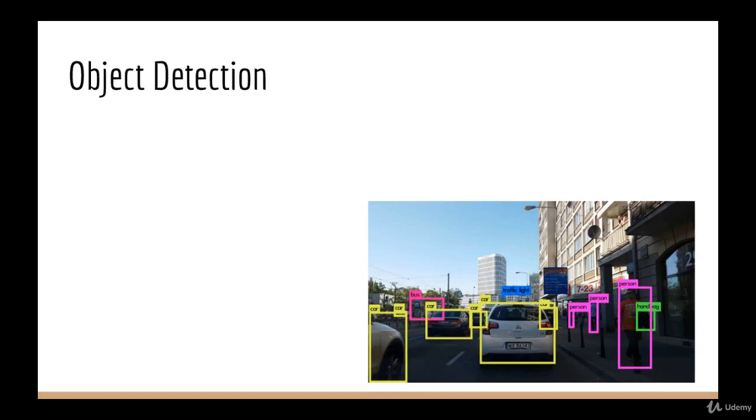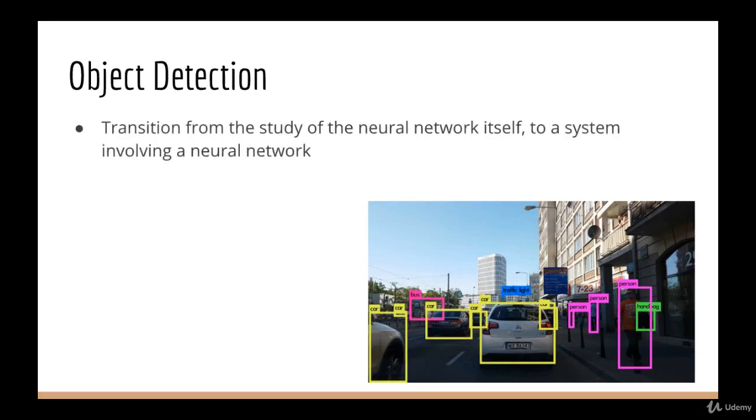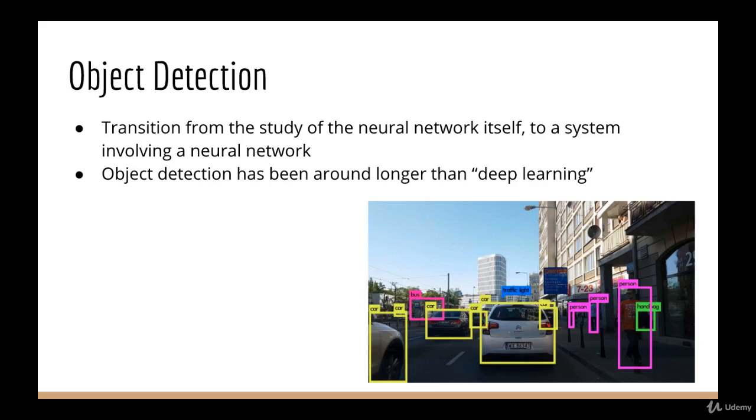This is the first section of the course where we will transition from the study of the neural network itself to something more like a system involving a neural network. As you can imagine, object detection is a task that has been around for a very long time, way before deep learning became popular. Neural networks, and CNNs in particular, are just a small piece of the puzzle.